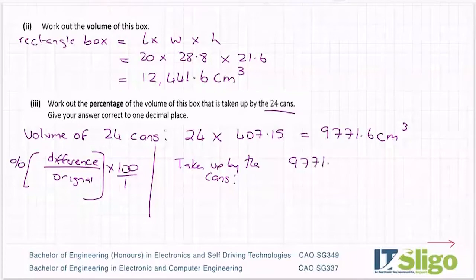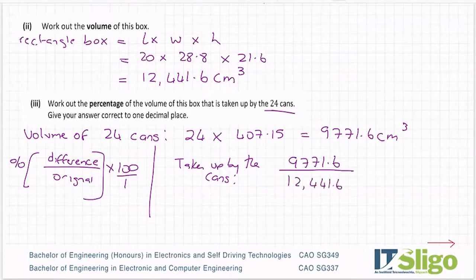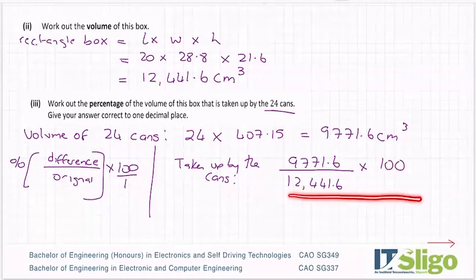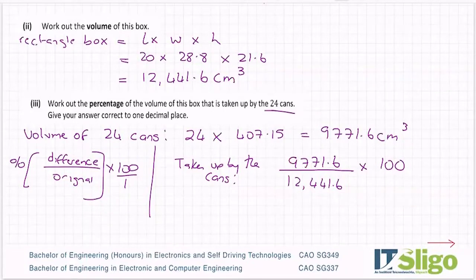So I take the volume of the cans over the original, and the original would have been the box in this case. And if you put it into your calculator as just this, you'll get your answer back as a decimal. And then you multiply by 100 to change it to a percentage. So 12,441.6 - I'm just putting this into my calculator now - multiply by 100. And I'm getting, does it say one decimal place? 78.539 is what I got. So if it's one decimal place, I have a look at that one. So it's 78.5%.